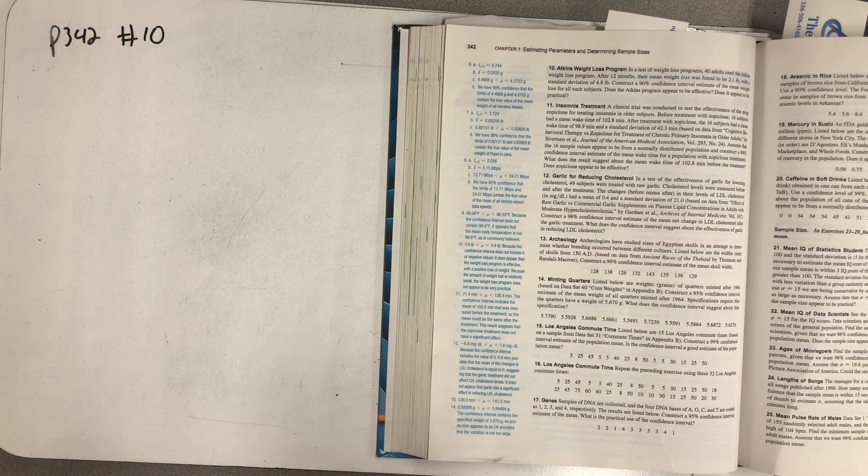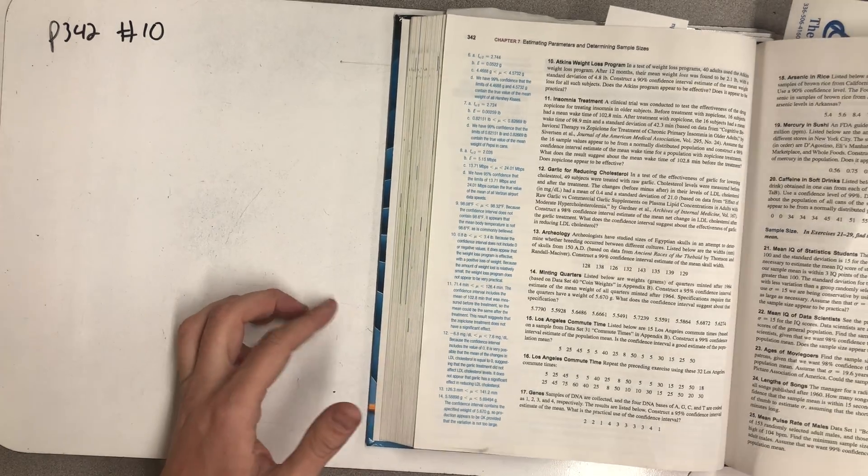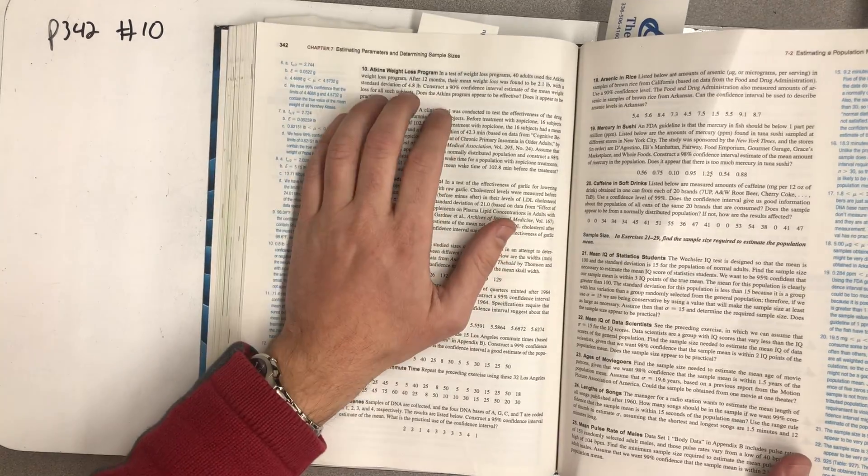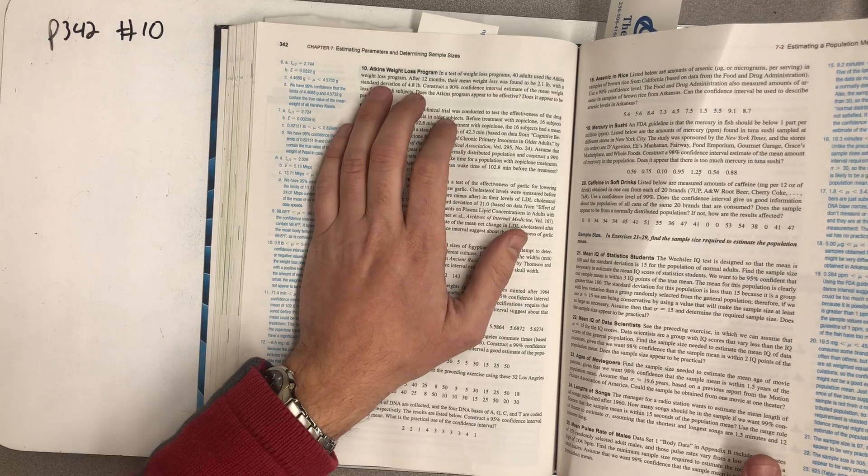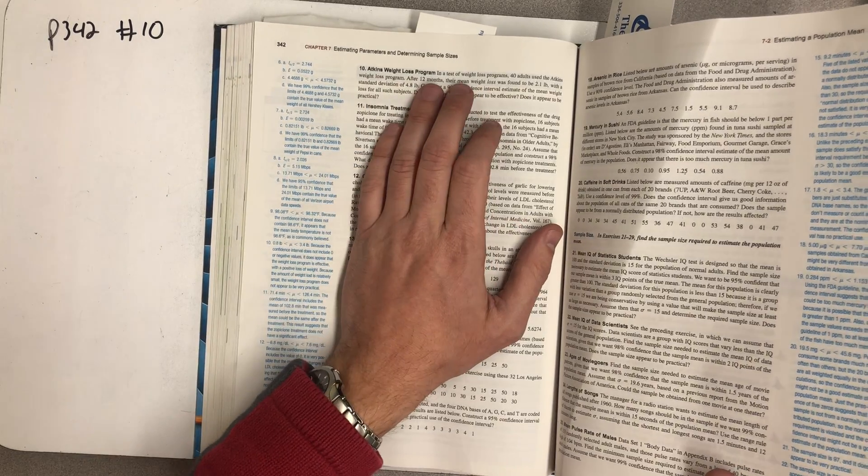In this video I would like to construct a confidence interval for a population mean. I'm going to do problem number 10 here out of our textbook off of page 342, Atkins weight loss program.